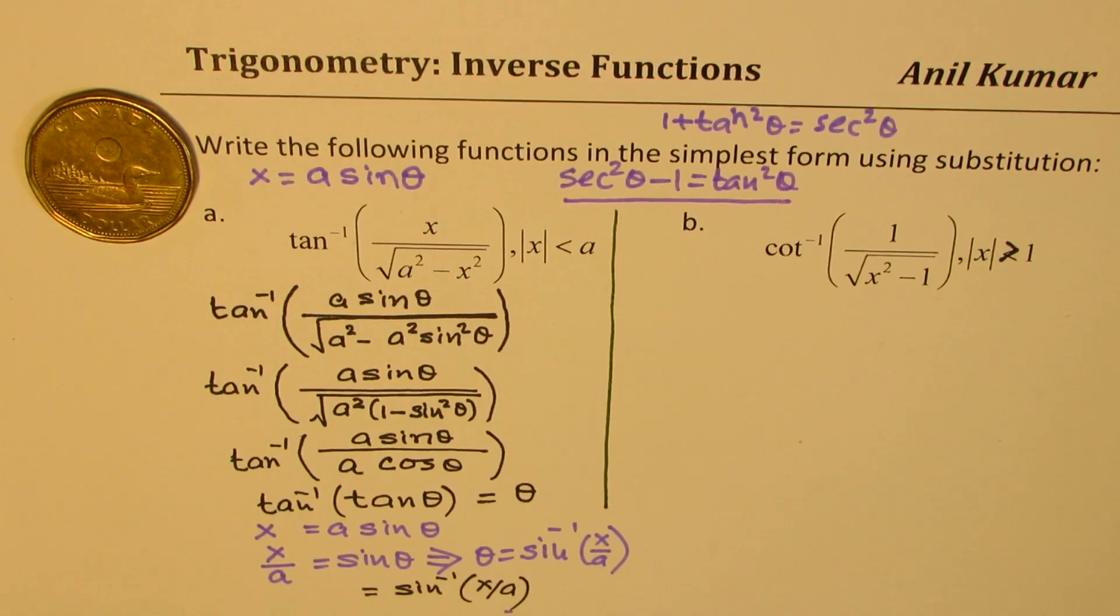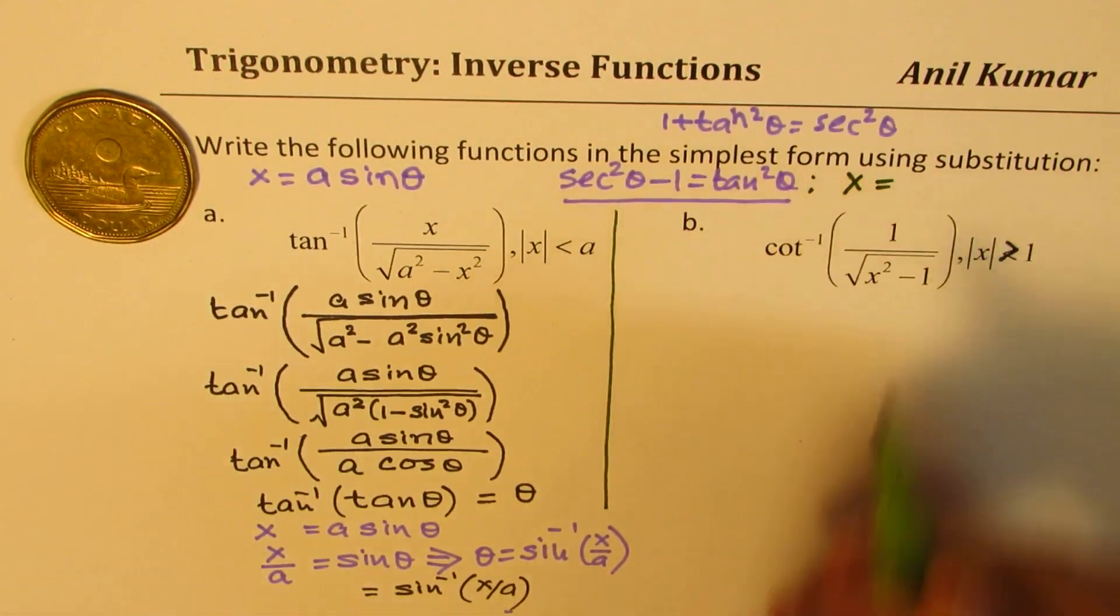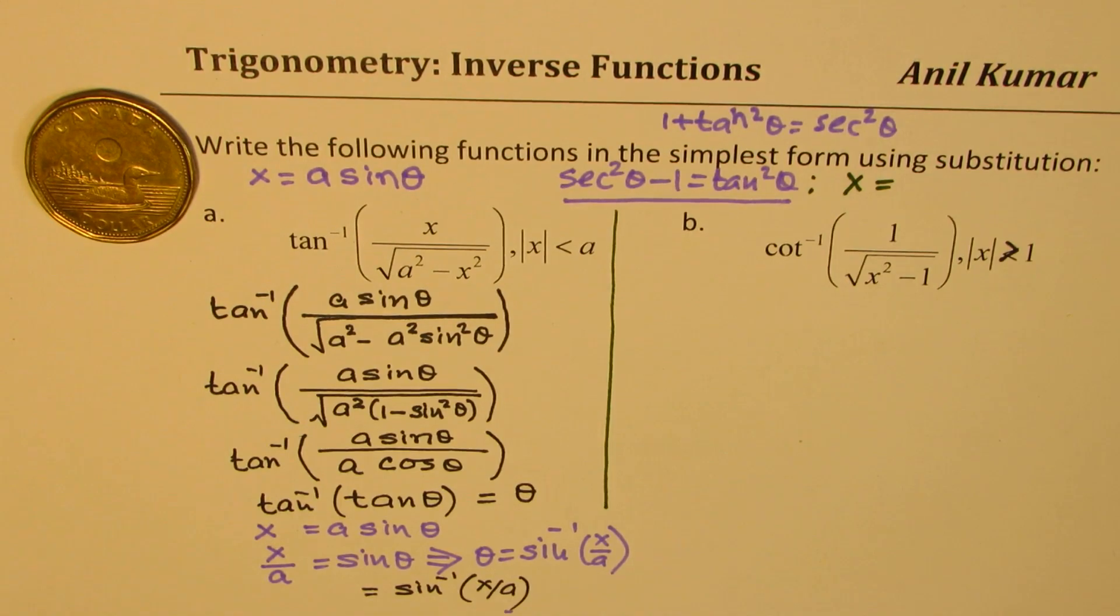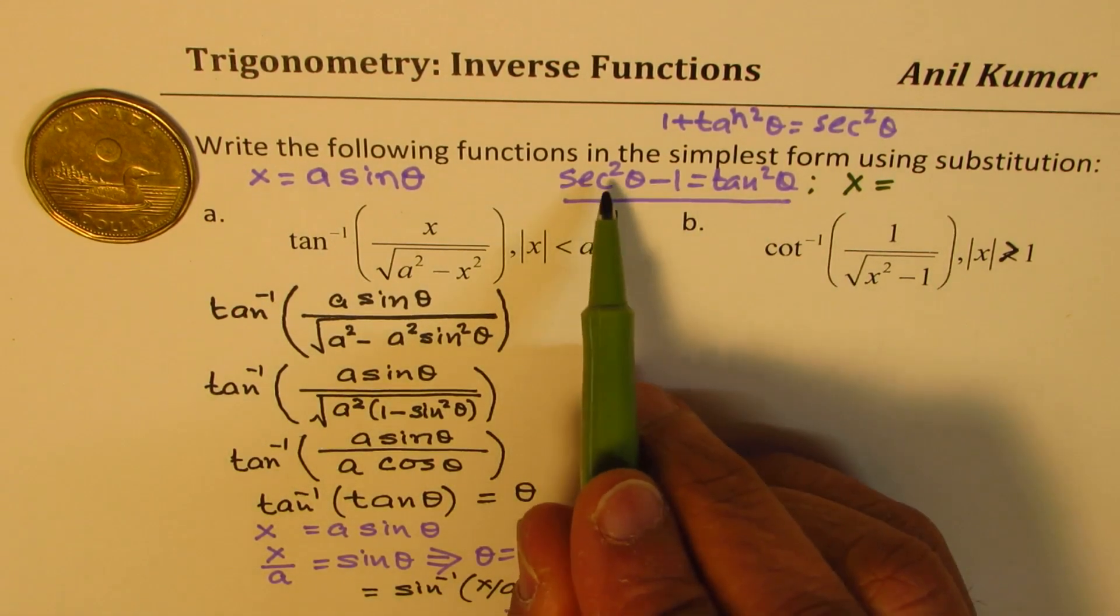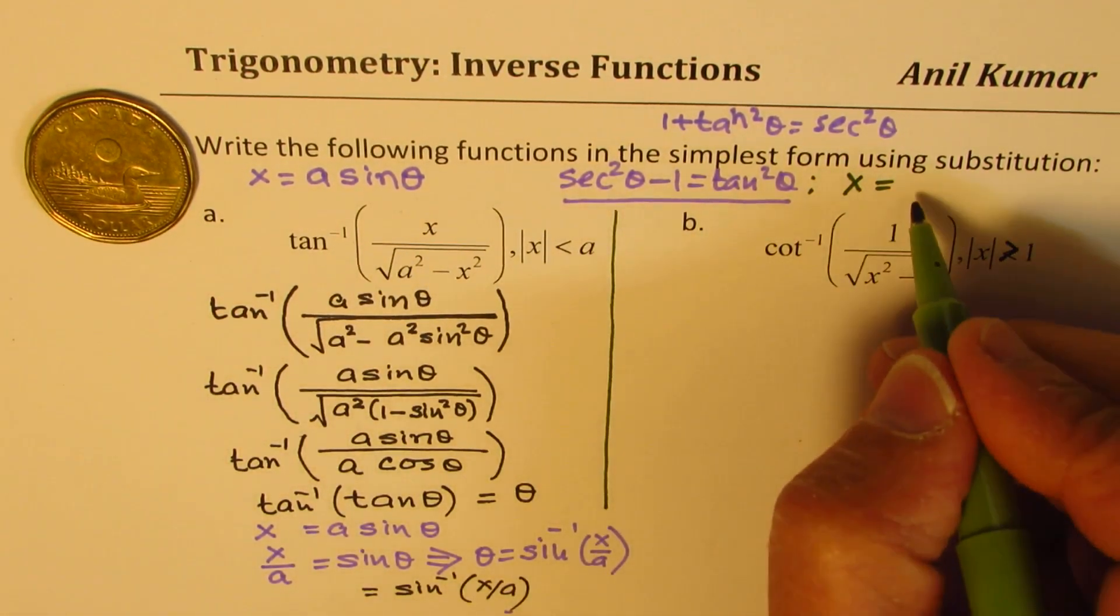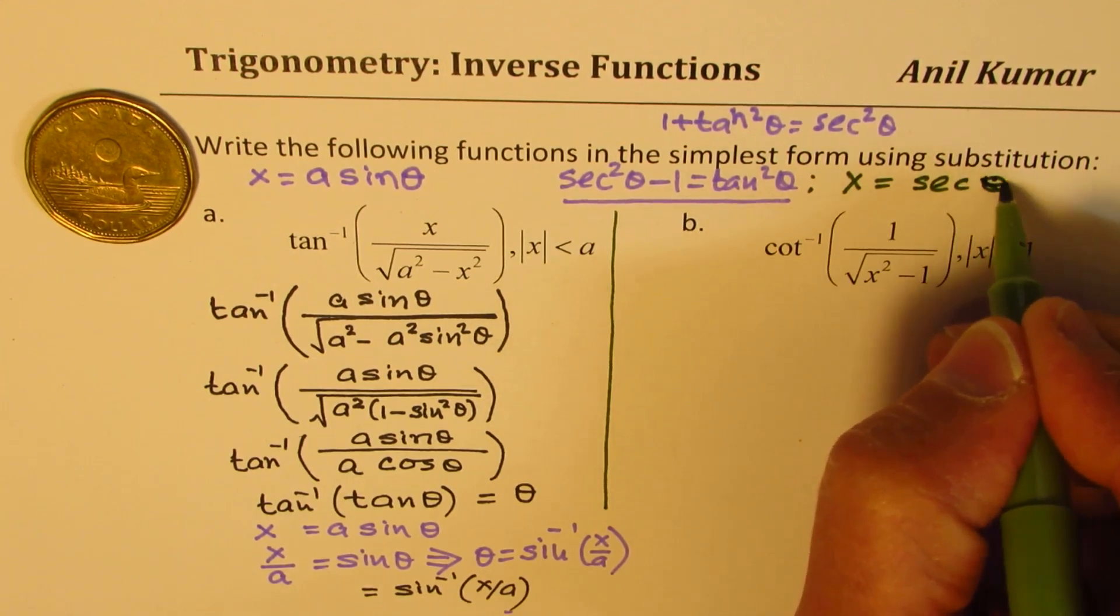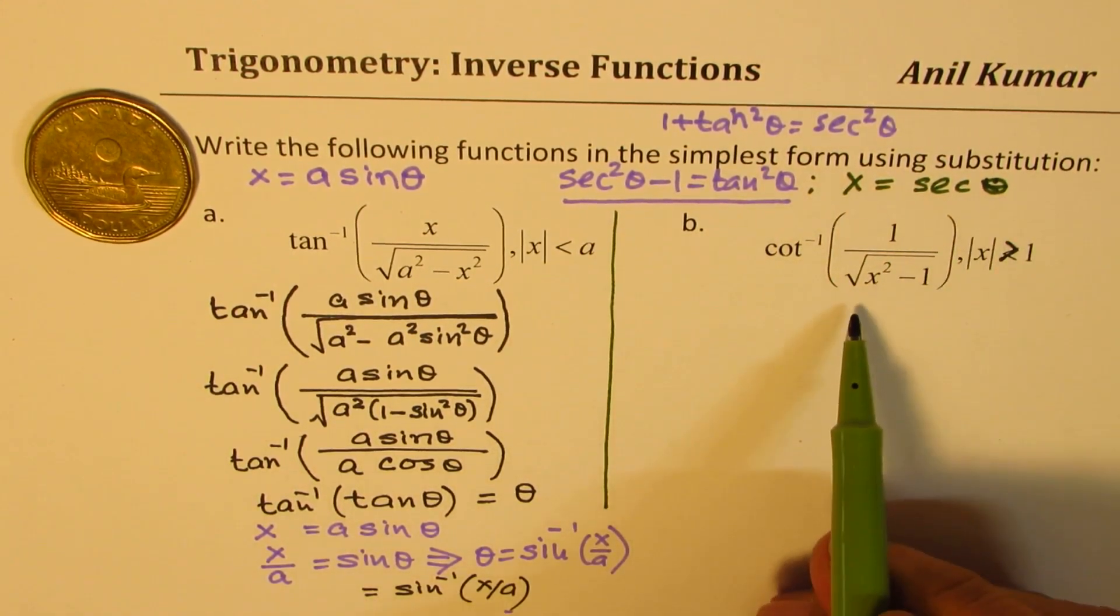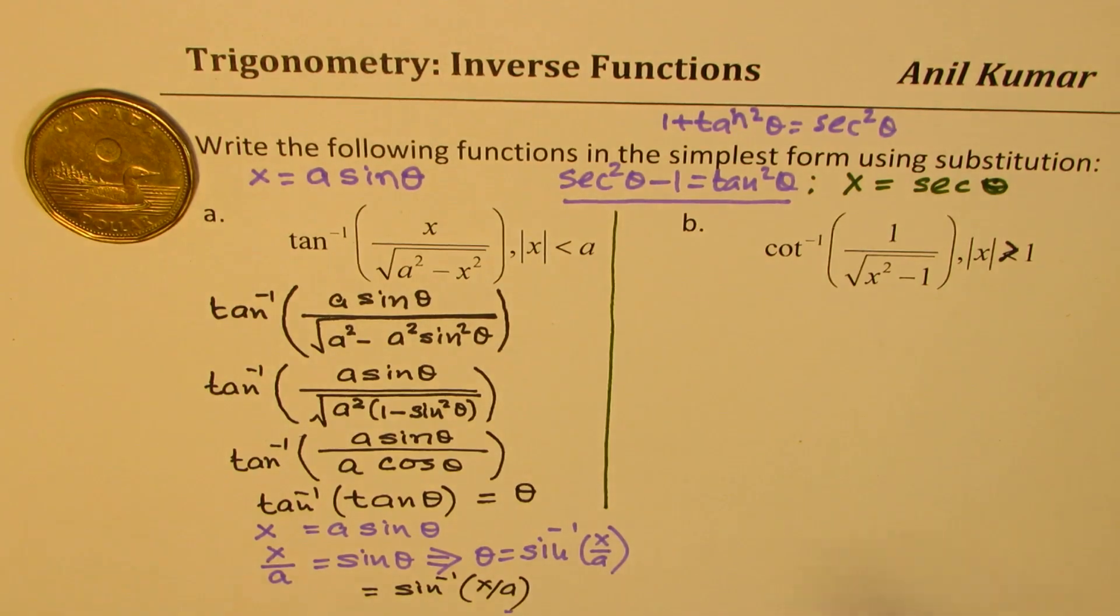That means I should substitute x as equal to what? Well, I could substitute this x as secant theta. So we get this as secant theta. So x is secant theta now for us. So let's make this substitution.